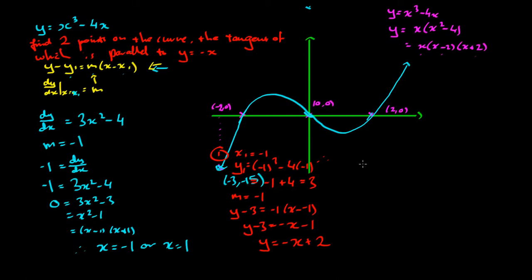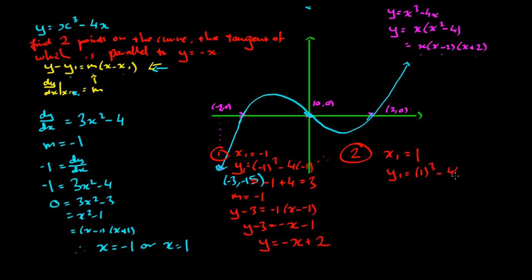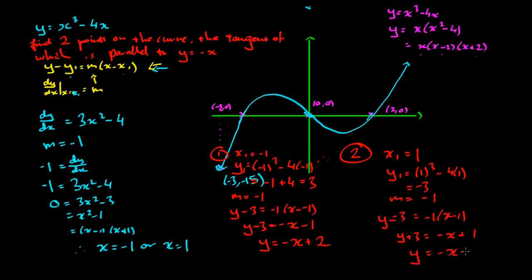For the second tangent, x1 equals positive 1, so the tangent is somewhere over here. y1 equals 1³ take 4 times 1, that's negative 3. And m is negative 1. Therefore: y minus (−3) equals negative 1 times (x minus 1), giving y plus 3 equals negative x plus 1, so y equals negative x minus 2. This indicates it intercepts down here at (0, −2). And that's how you find a tangent: first if you have the exact coordinate, then if you have just the x value, and finally if you have the gradient of the tangent and need to find the corresponding points.